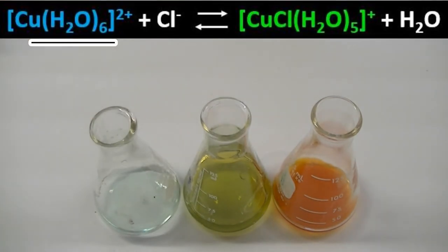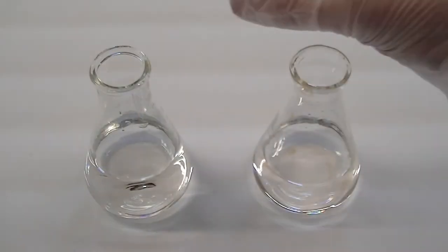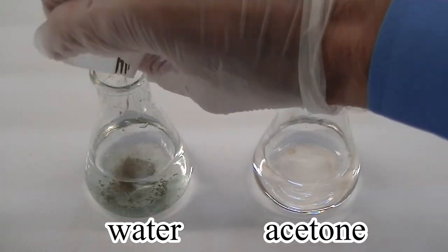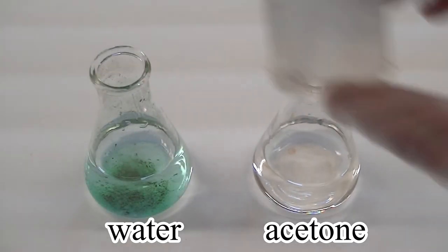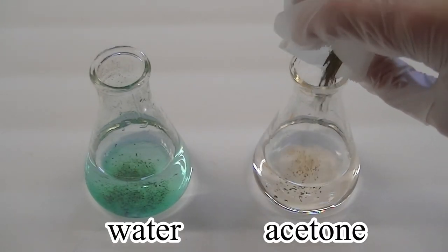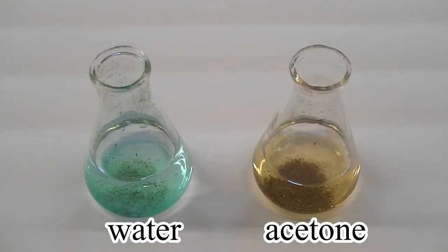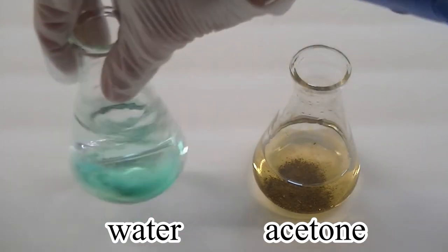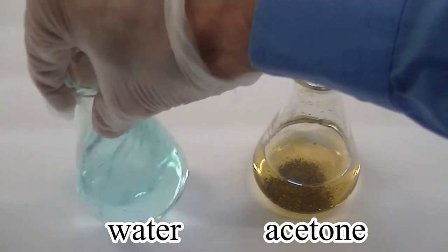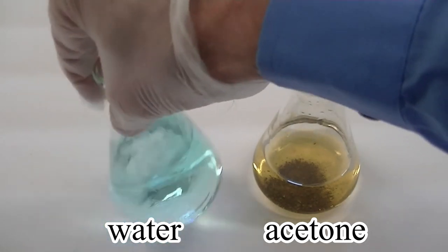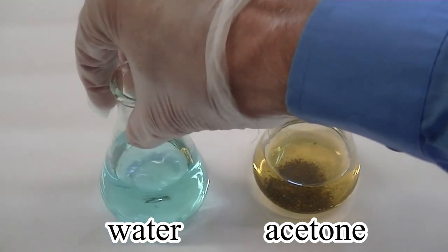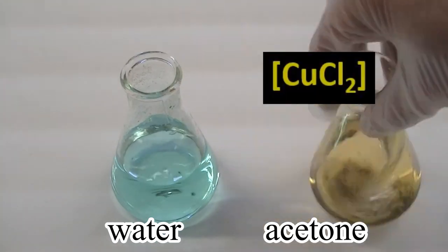Now we're ready to explore the color difference observed when anhydrous copper-2 chloride is dissolved in water and acetone. The compound appears blue in water, but yellow-green in acetone. Because the compound contains two chloride ions for every copper-2 ions, it makes sense that the dichloro-copper species, which is yellow-green in color, should form. This is certainly what's seen in acetone.